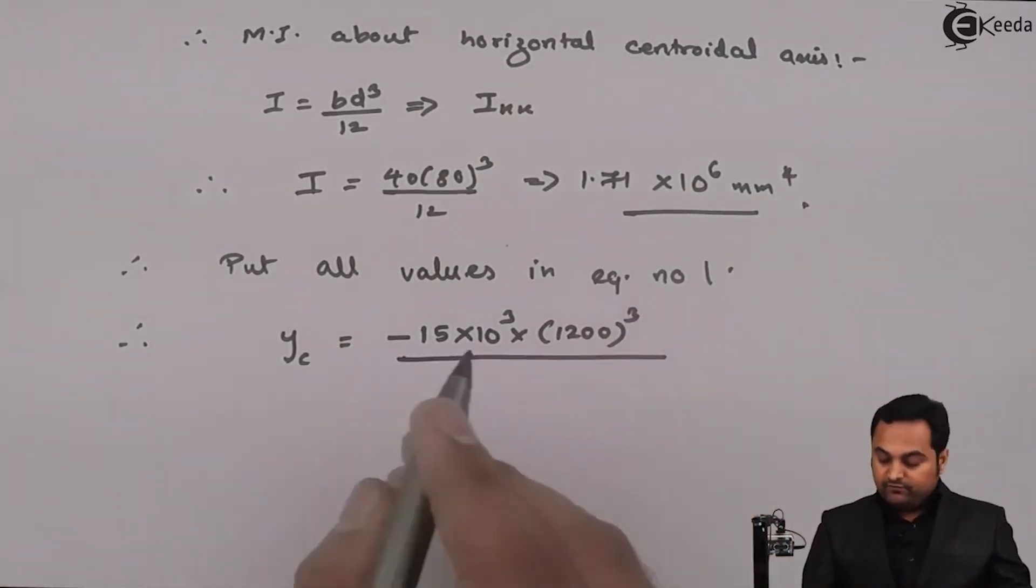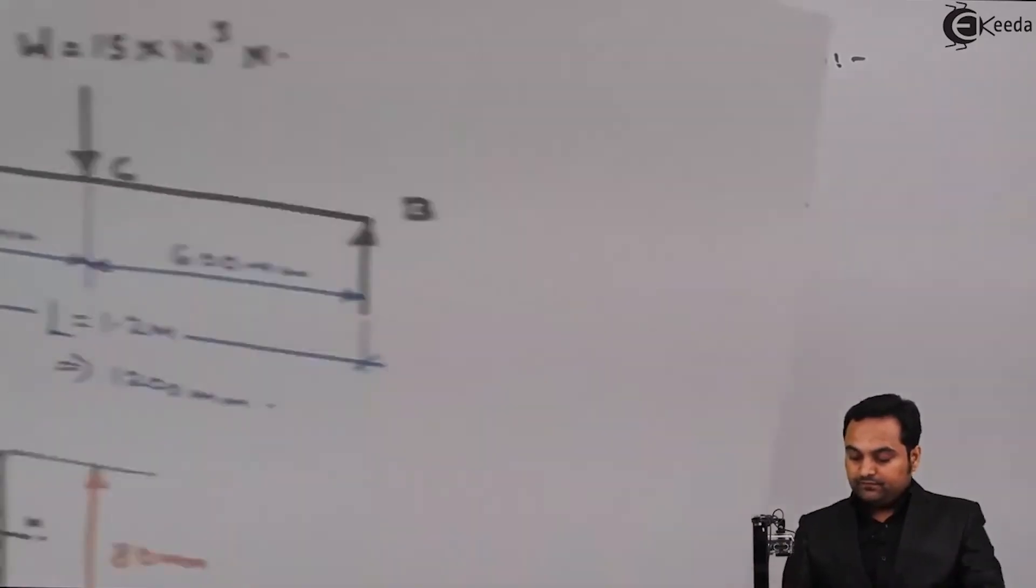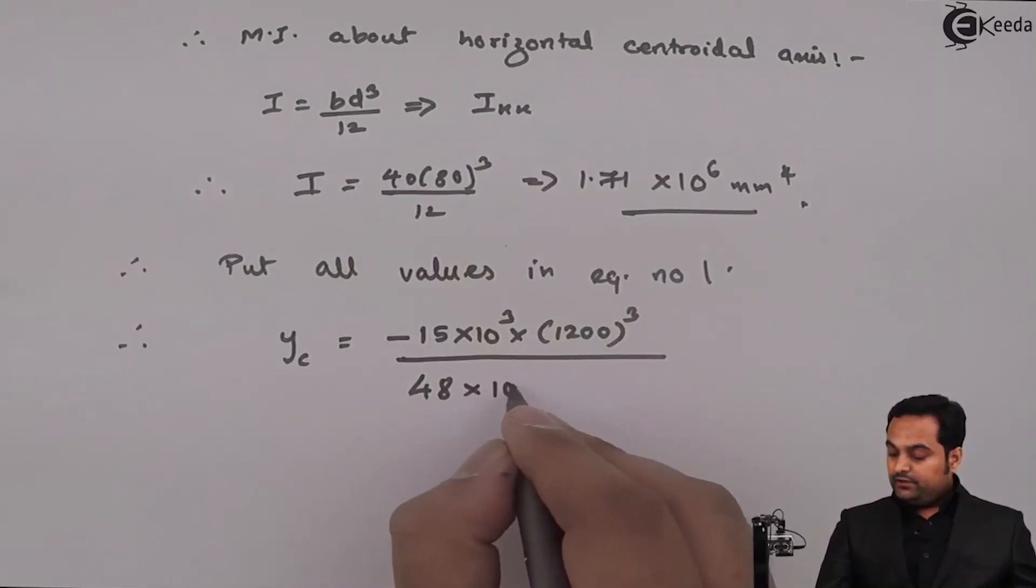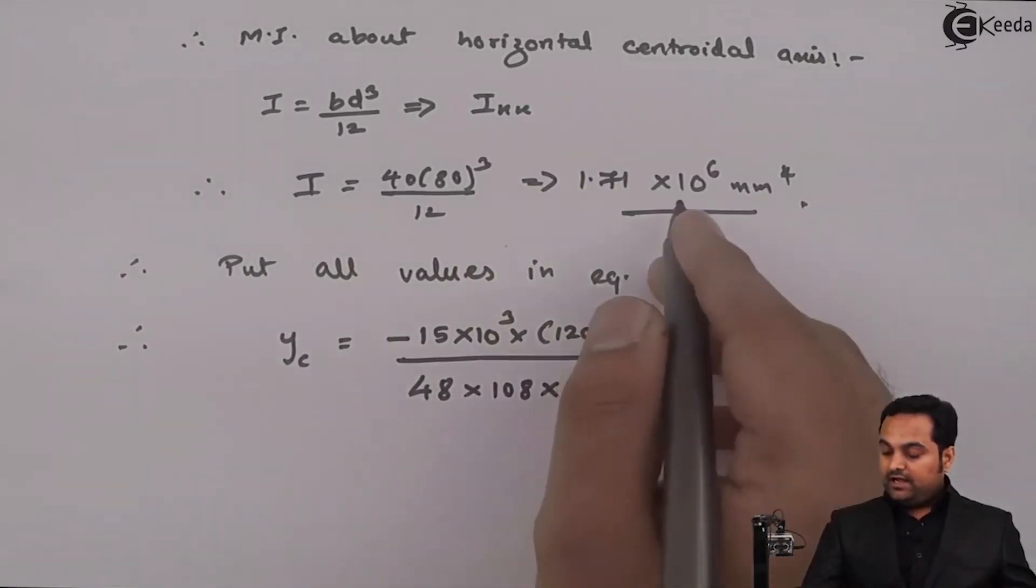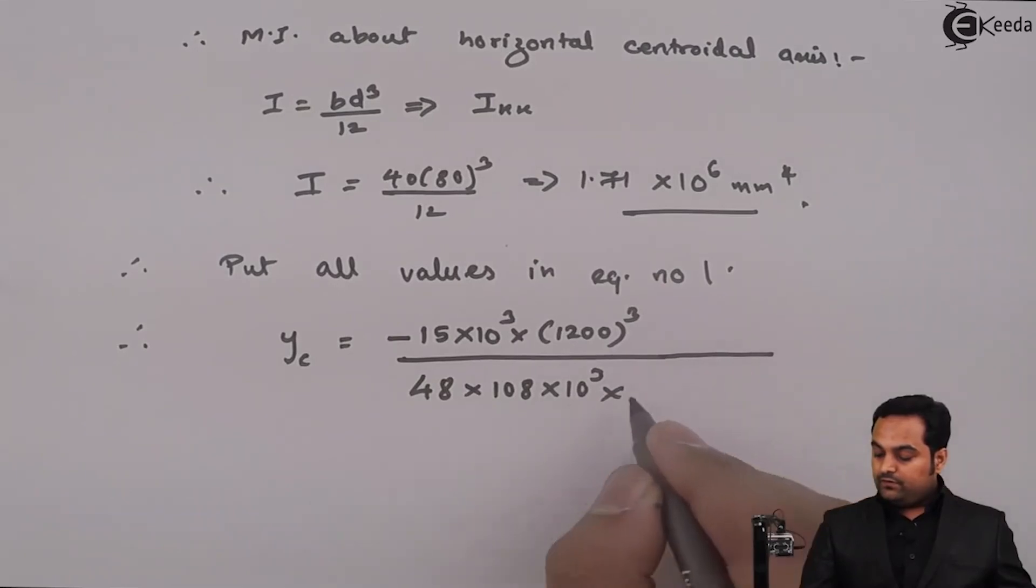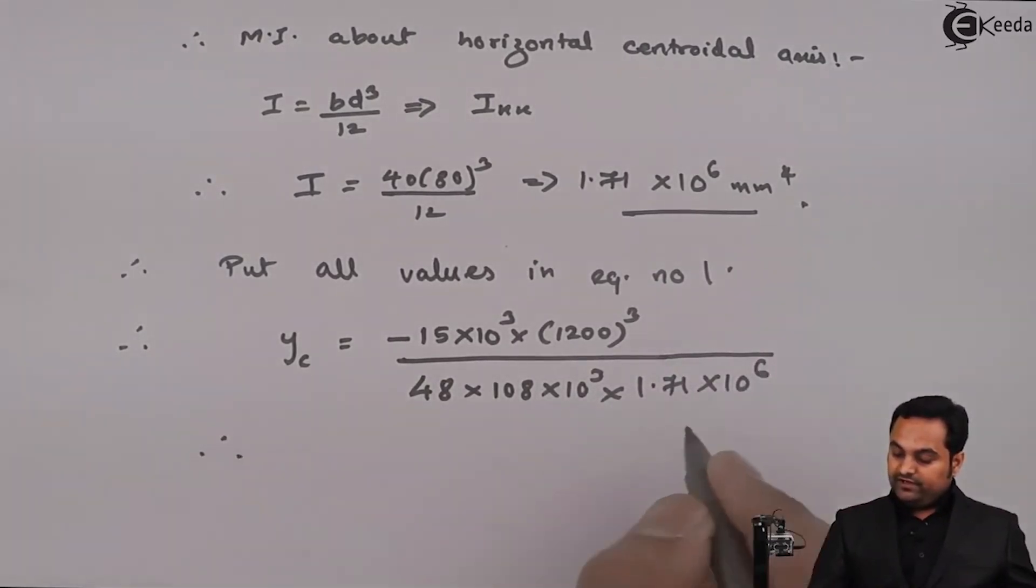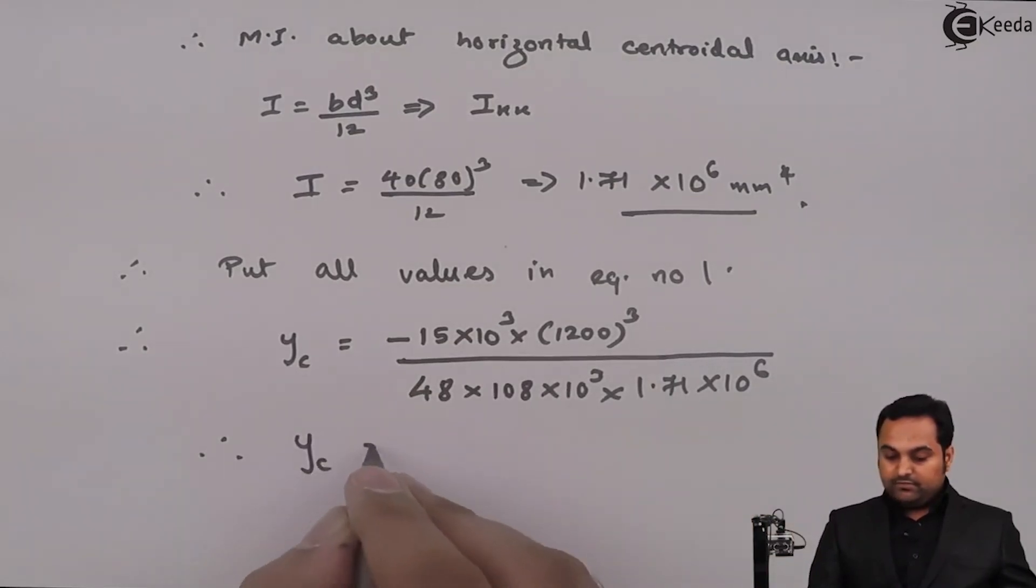Divided by 48, 48 E is given as 108 into 10 raise to 3, and I is 1.71 into 10 raise to 6. So if I calculate all terms here, my y suffix c value comes out to be minus 2.93mm.